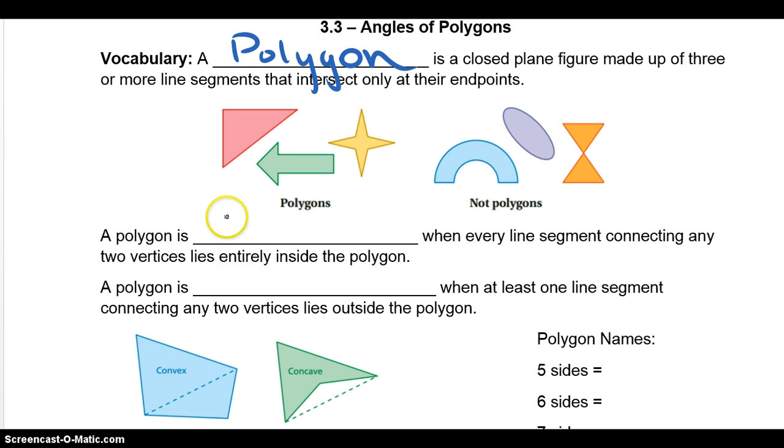A polygon is convex when every line segment connecting any two vertices lies entirely inside the polygon. A concave is when at least one line segment connecting any two vertices lies outside the polygon. Look at this one here. It caves in, so this one's concave. This one over here is convex.